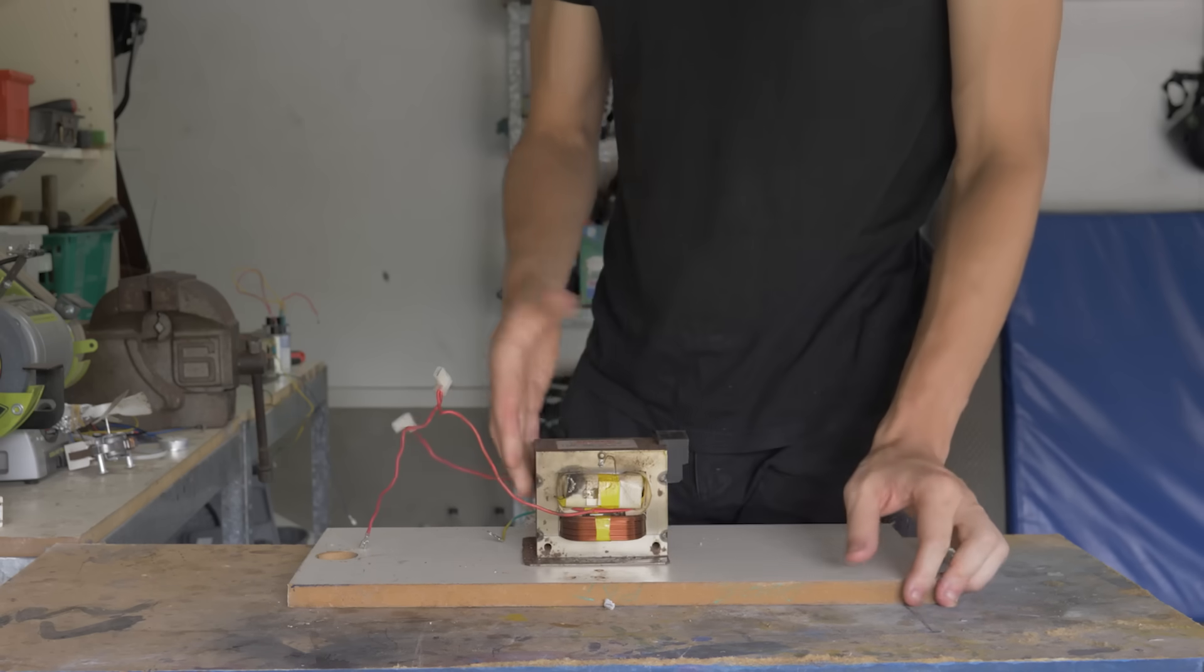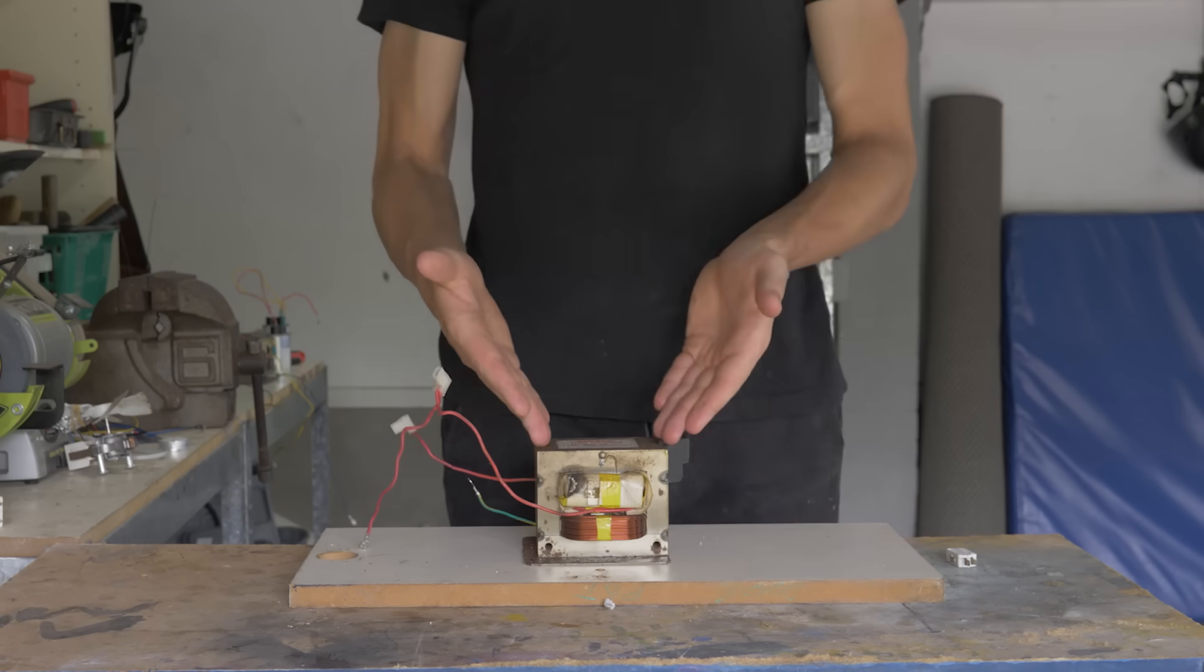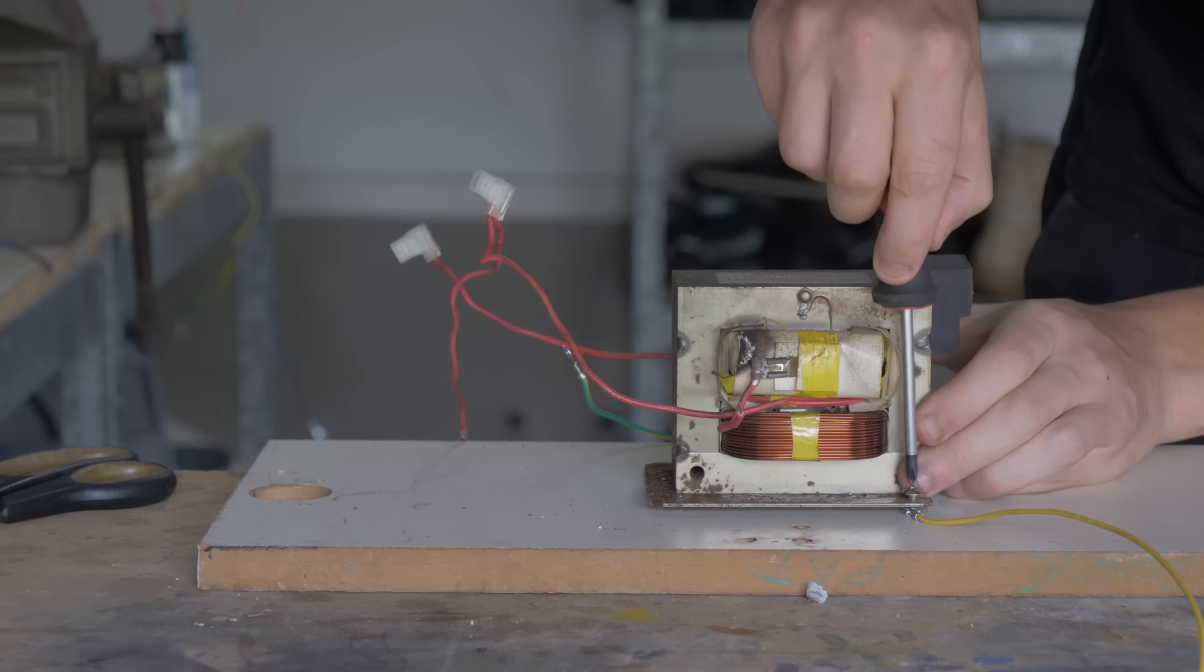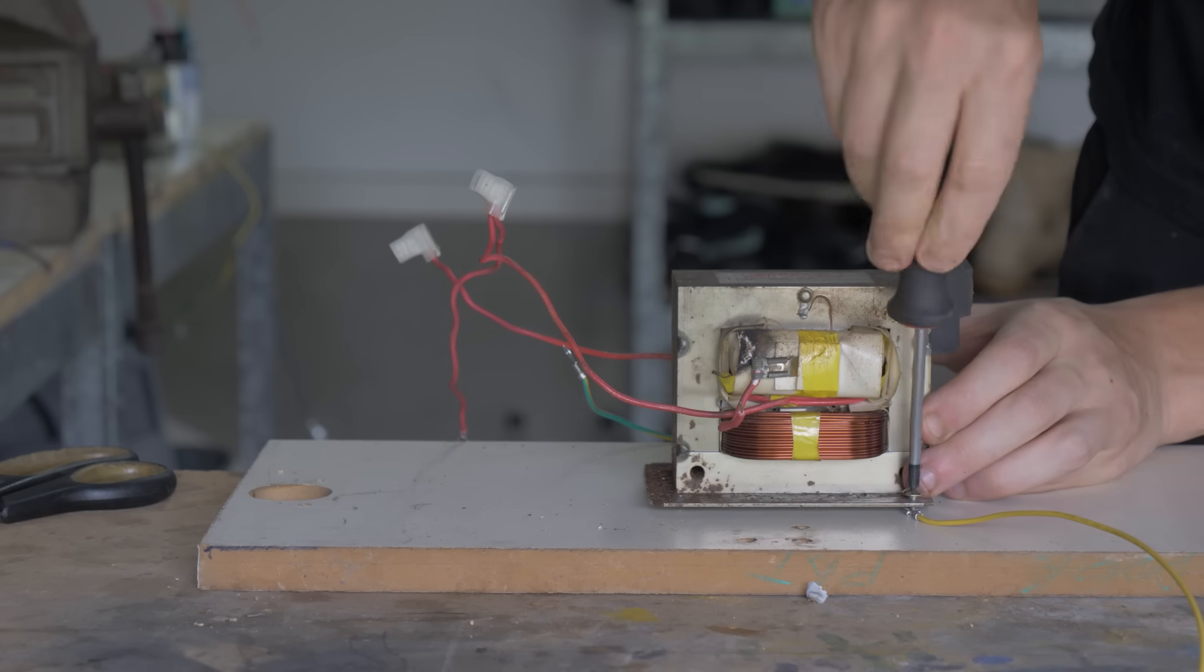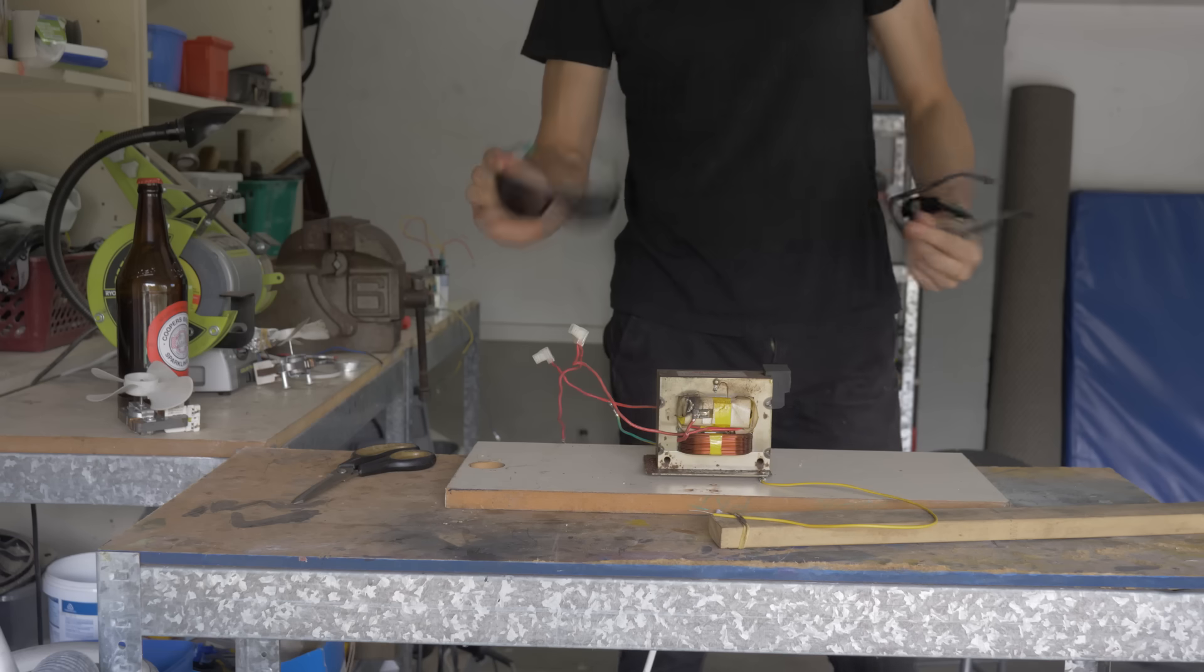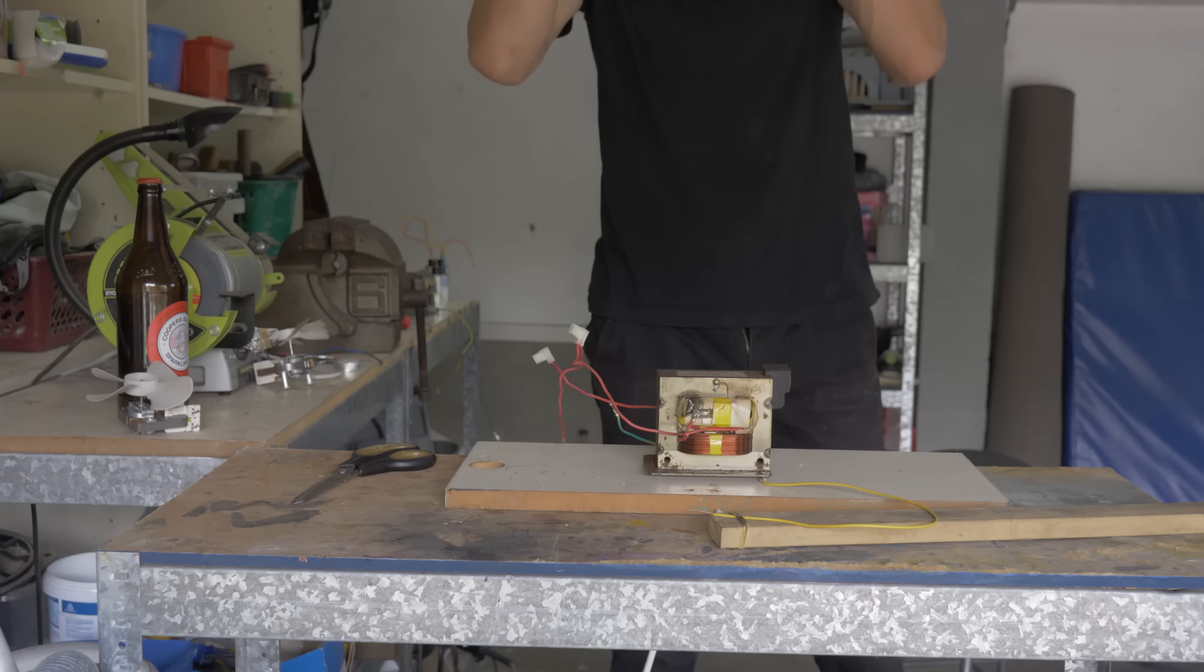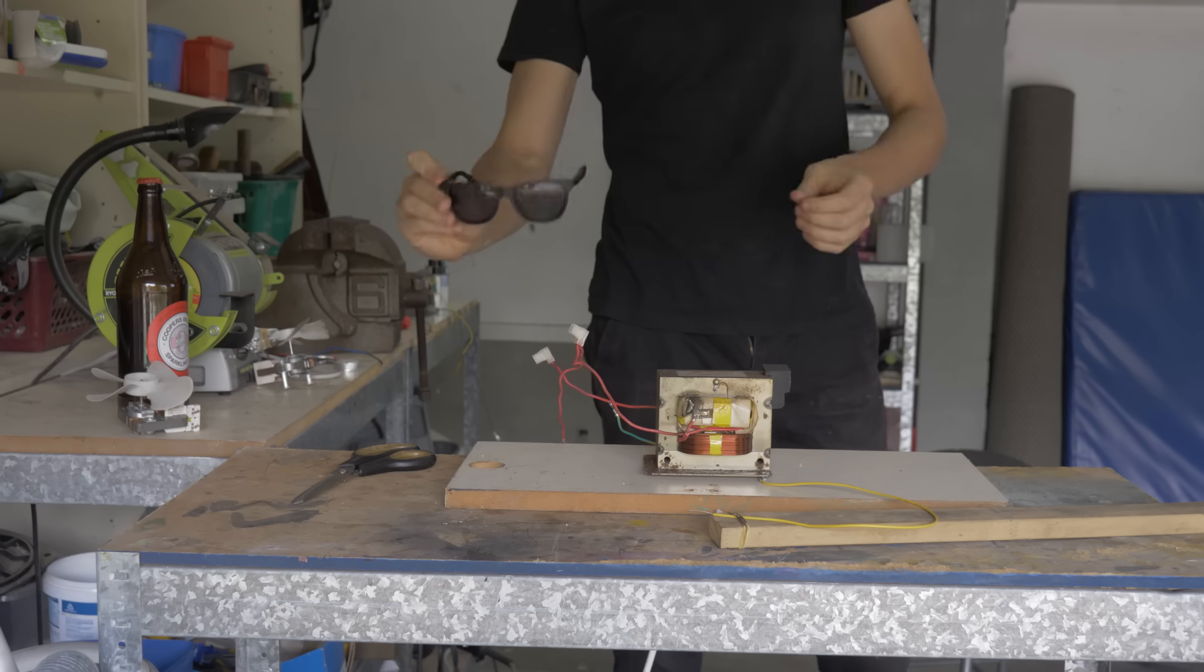Now, transformers work in a very complicated way. The power goes in here, and then comes out there. And then all we need to do is touch some wires together, and we get an electrical arc. Now, the arc gives off dangerous bright light, and I recommend wearing at least three pairs of sunglasses if you can't afford proper UV safety goggles.